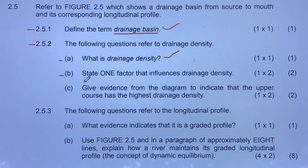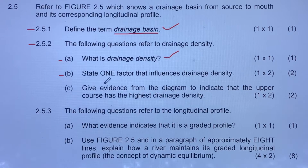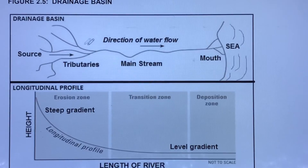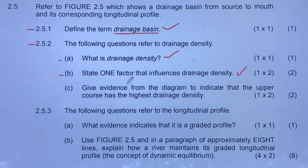Question 2.5.2b: State one factor that influences drainage density. One factor that influences drainage density is the number of tributaries. The number of tributaries plays a major role in influencing drainage density.